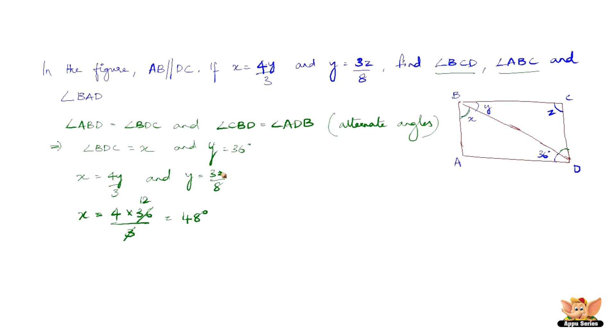And let us also find Z. We have Y equals 3Z by 8, so Y is 36 degrees. 36 equals 3Z by 8, so this is 36 into 8 divided by 3 equals Z, which is 12 times 3 and 12 times 8 is 96 degrees. So Z equals 96 degrees.